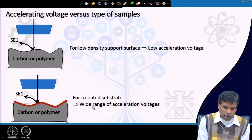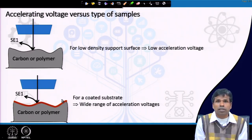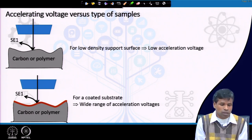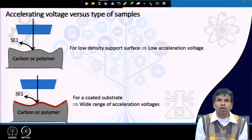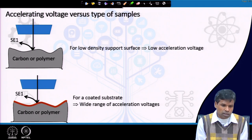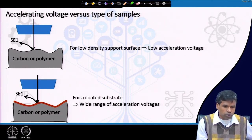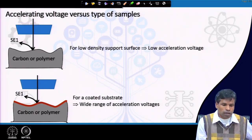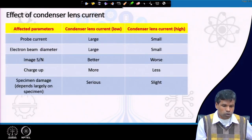For insulating samples coated with a conducting film — such as gold, palladium, or palladium-platinum alloys — to avoid charging, we can use a wide range of acceleration voltages.